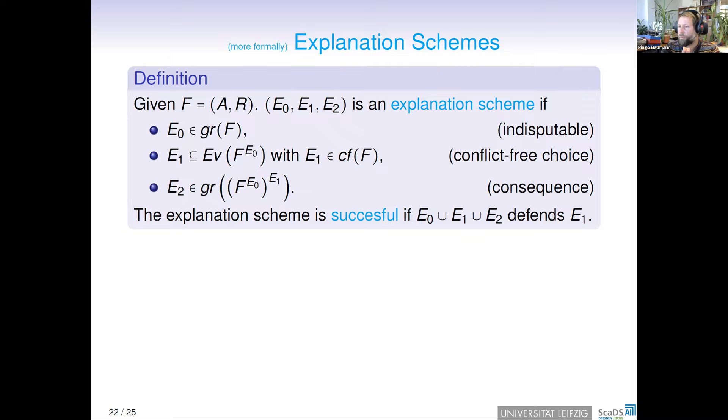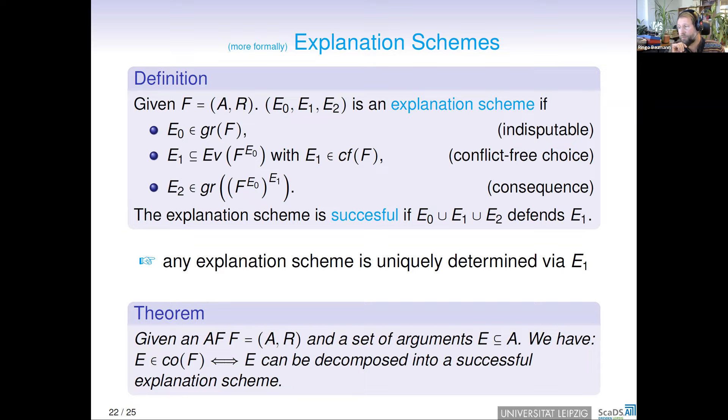We call an explanation scheme successful if E0, E1, E2 defends E1. Please observe, importantly, that an explanation scheme is uniquely determined by E1. Why is this the case? Because the grounded extension is uniquely determined, and the set E2 only depends on E1. So the only choice is E1.